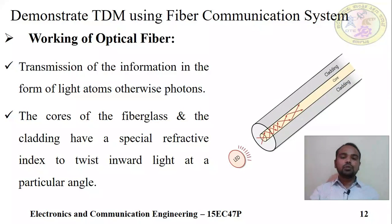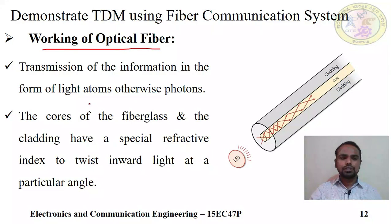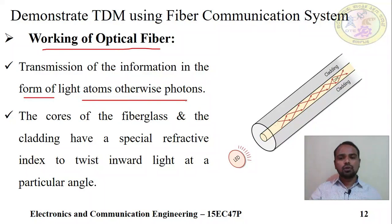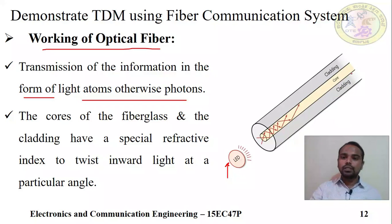Now coming to the working of fiber optic cable. The transmission of information is in the form of light — or photons. An LED, when voltage is applied to it, emits light. That light is transmitted over the fiber optic cable. The basic structure of fiber optic cable consists of two basic parts: one is the core and the other is cladding. The core is made up of glass, whereas the cladding is the protective part made up of plastic.